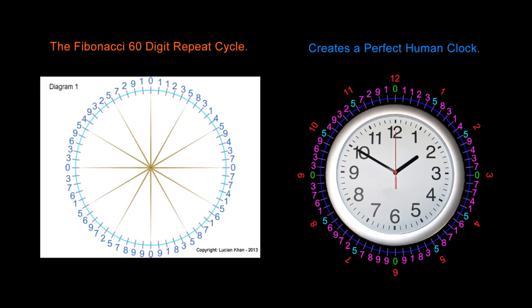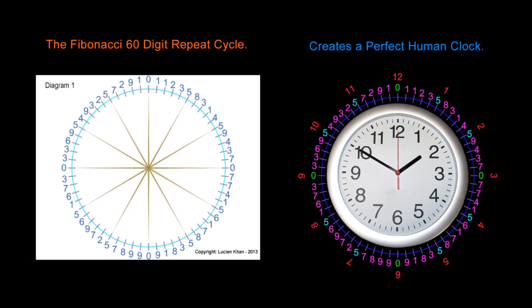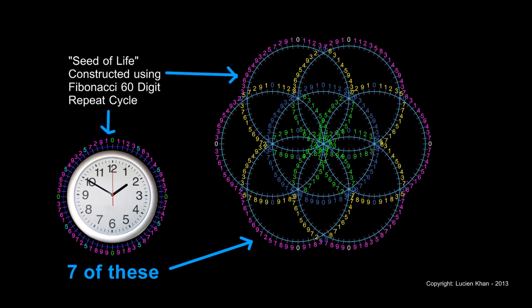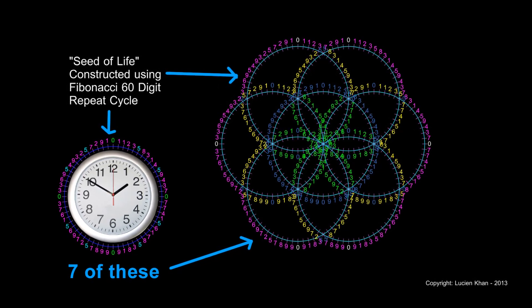After my last video someone asked me a very important question. Yes, the Fibonacci series is creating a perfect clock and that clock reveals all these sacred numbers. But what concrete use is any of this?